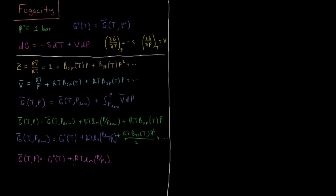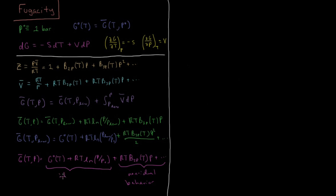So far, the result G(T, P) = G°(T) + RT·ln(P/P°) is exactly as if the gas were behaving perfectly ideally — nothing non-ideal yet. But beyond that, we must include the virial coefficient corrections: plus RT·B2P(T)·P, plus terms depending on P², P³, etc. All of these extra terms encapsulate the non-ideal behavior.